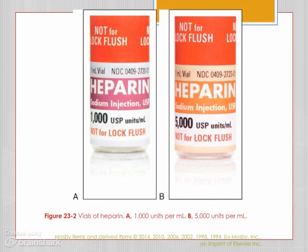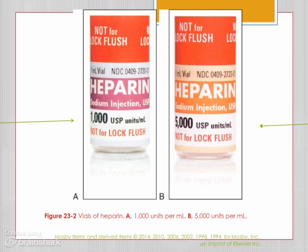Here's an example of two heparin vials. The vial on the left as you're looking at the screen is 1,000 units USP per mL, and it also says 'Not for Lock Flush.' The vial on the right says 5,000 USP units per mL. This illustrates the critical importance of reading the label carefully.